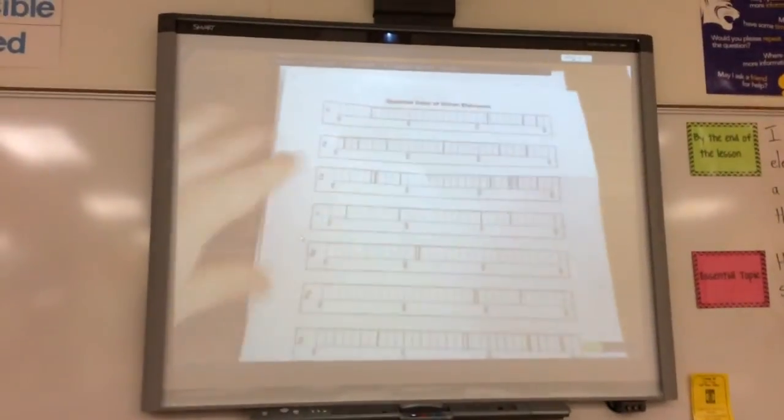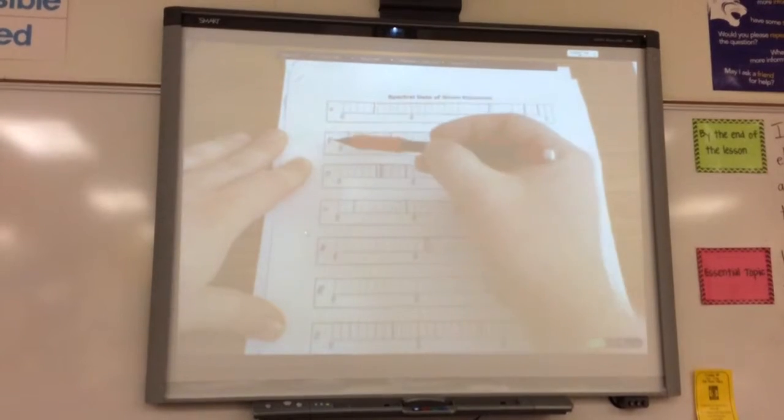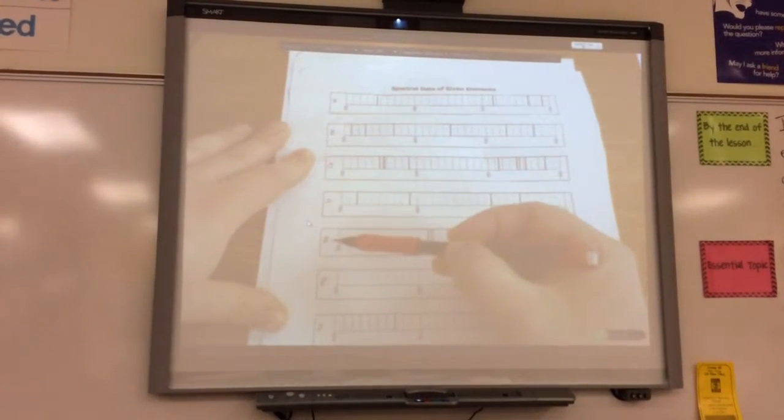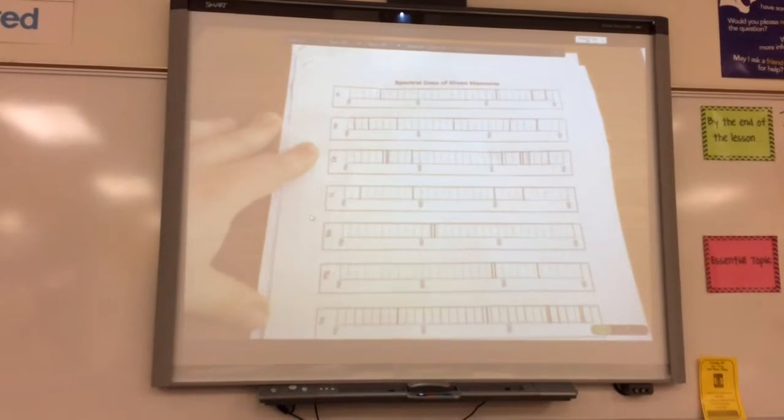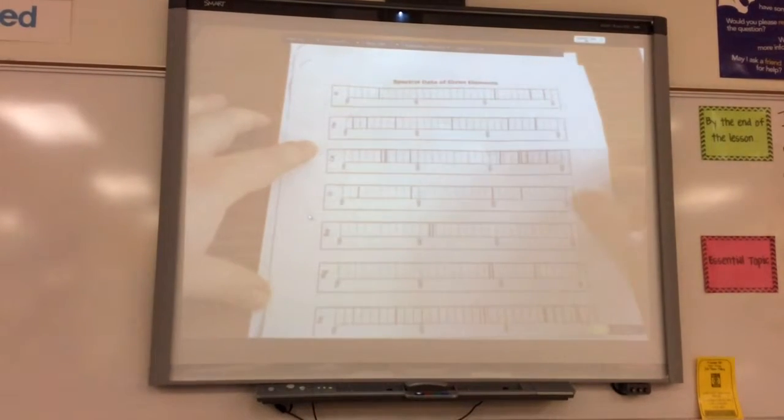Now, notice there are eight elements. There's hydrogen, helium, calcium, lithium, sodium, and so on. Are any of these elements, do they have the exact same black lines? No. None of them are exactly the same.